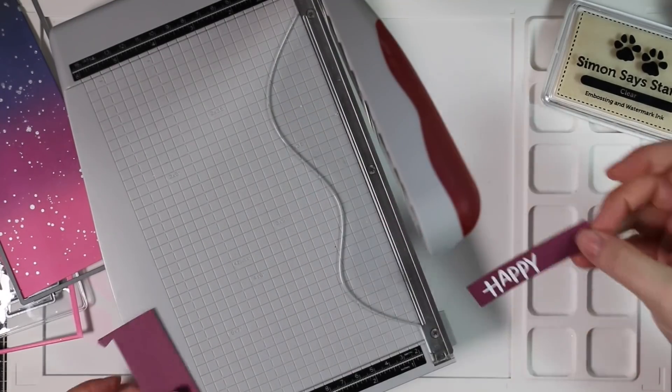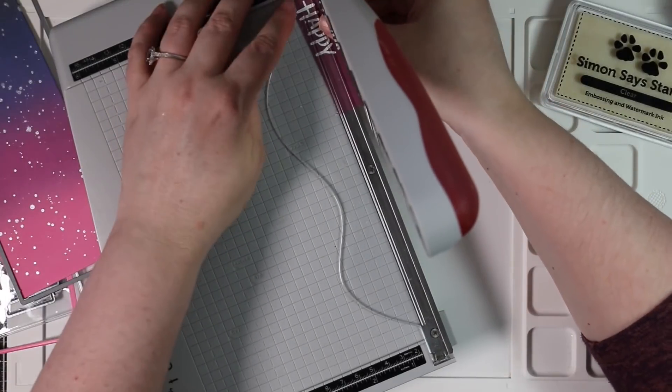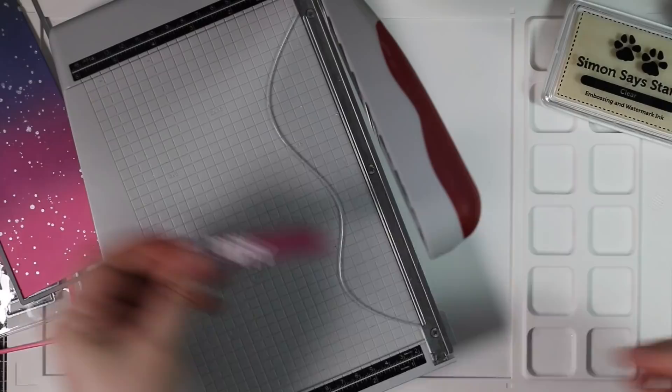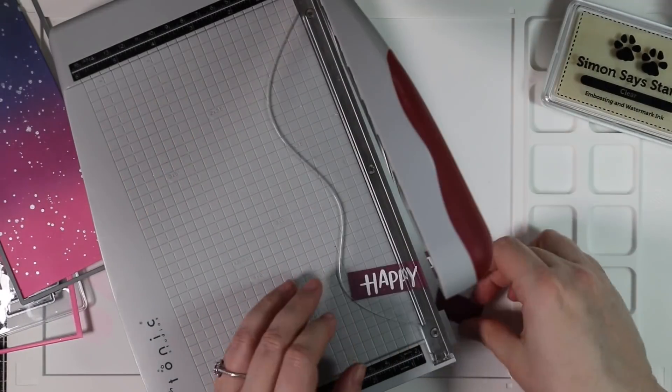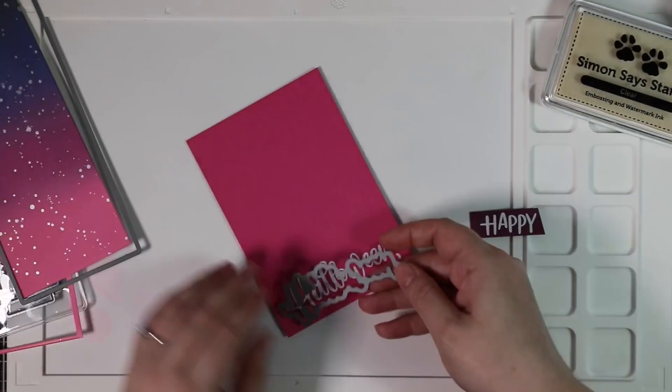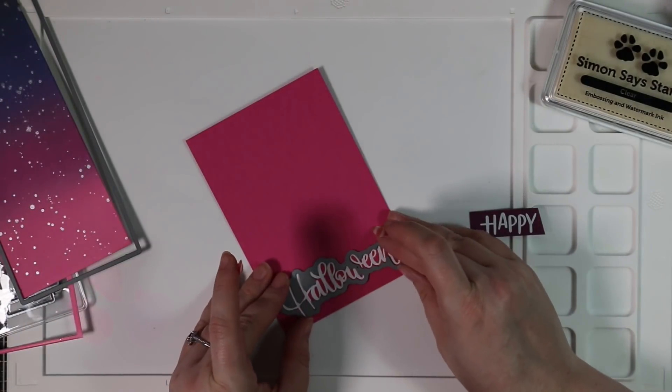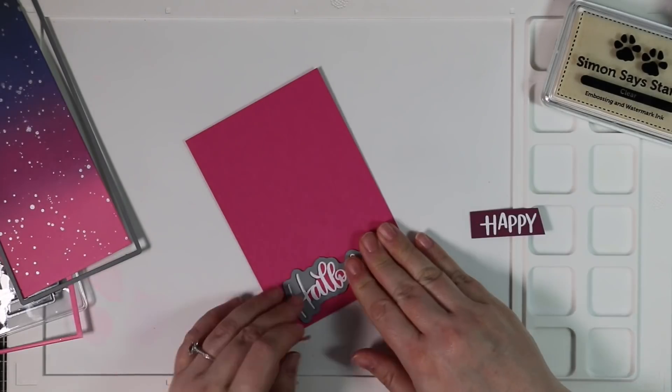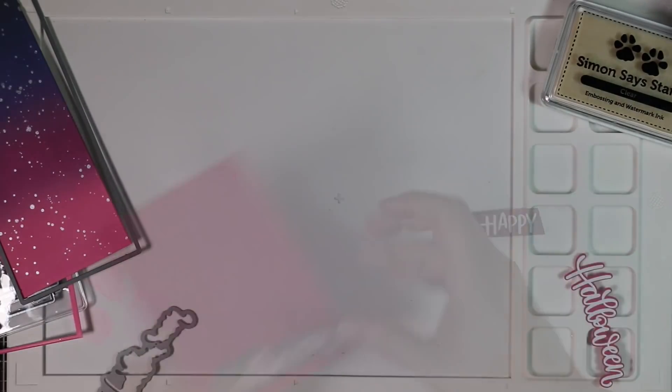So I die cut it and set it aside. The sentiments are from the Simon Says Stamp hand-lettered Halloween. This came out a couple of years ago, 2018. It's one of my favorites. I've used it in a bunch of Halloween videos, just love it. So I white heat embossed a couple sentiments. The little happy sentiment I just trimmed down with my paper trimmer. The Halloween, there's a coordinating wafer die set for this sentiment set. So I die cut that Halloween with the coordinating wafer die.